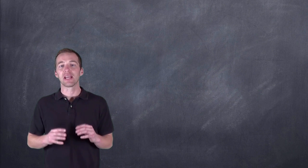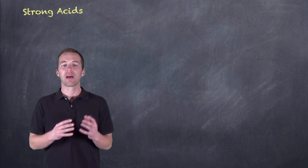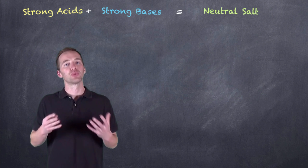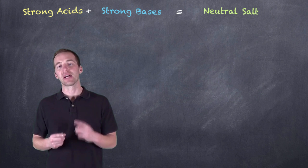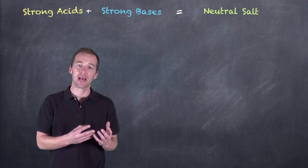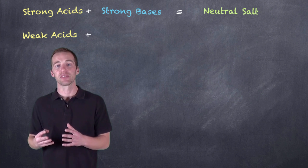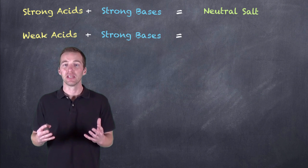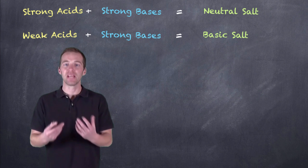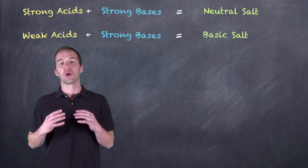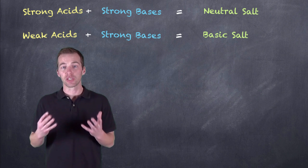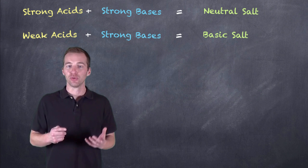Just taking a look at a general summary: we have strong acids and strong bases combined to form a neutral salt, and that's what we've been looking at up until this point. But we also have other combinations. If we had a weak acid combined with a strong base, what we would get is a solution that produces a salt as well as water, but we would have a basic salt — that is, the salt would actually impact the pH of the solution to such an extent that it would be higher than a neutral pH.